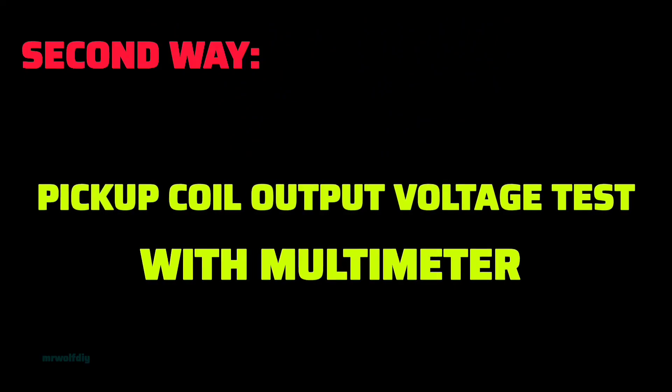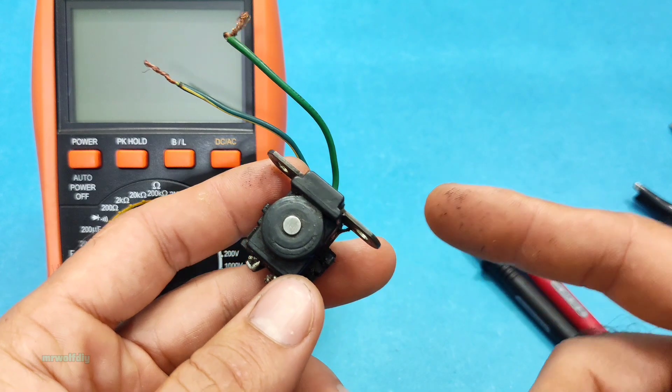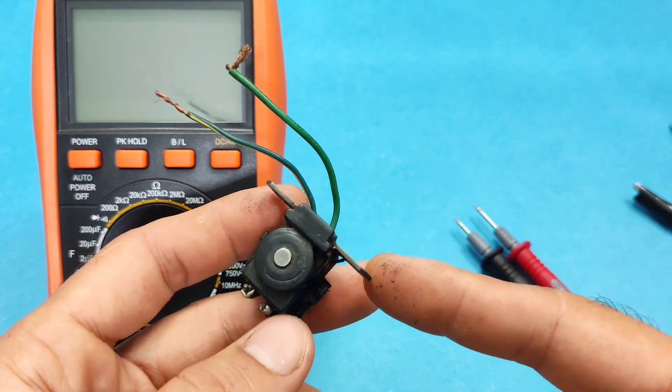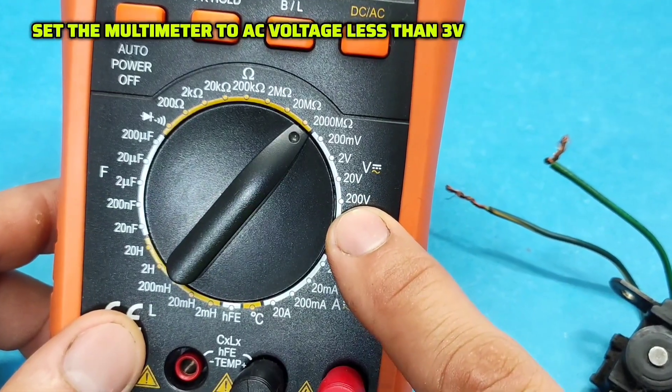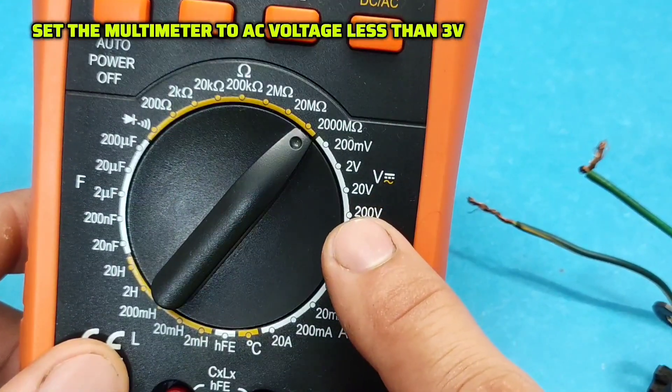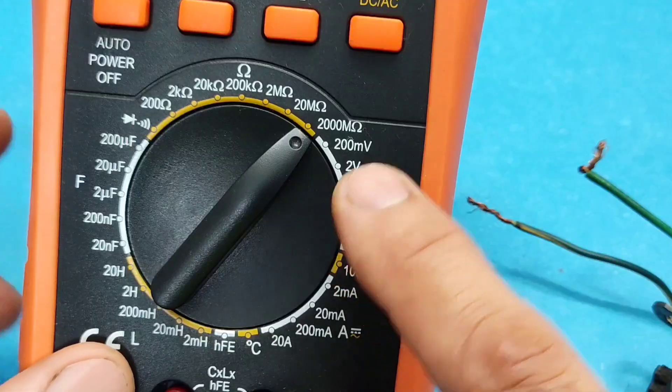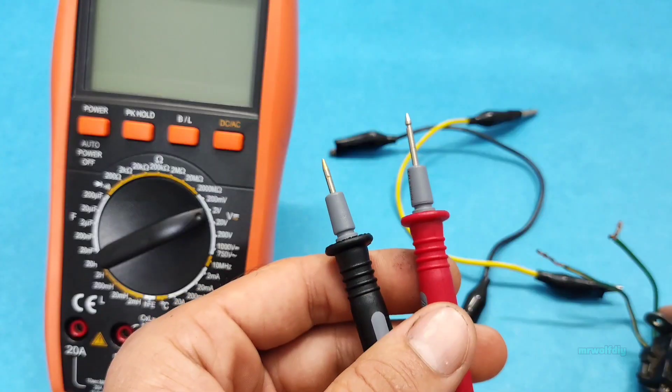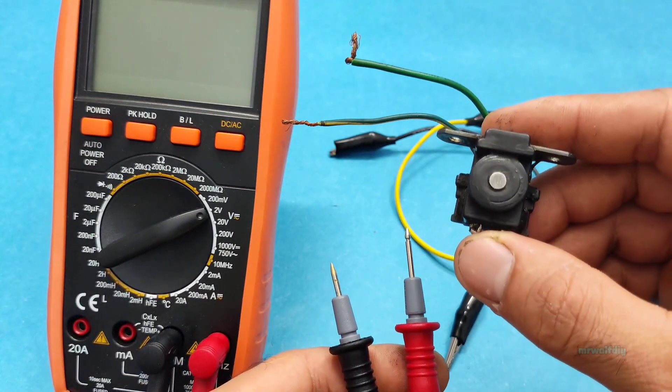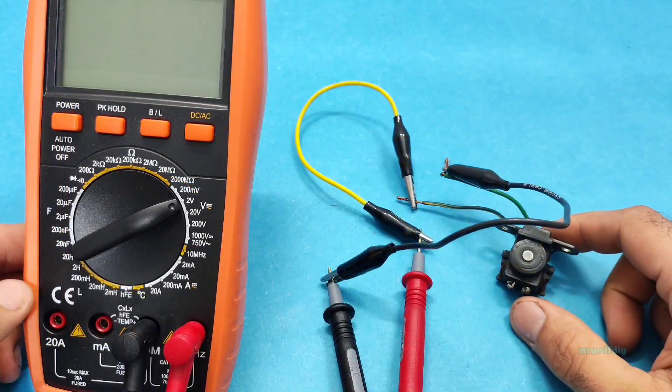Second way, voltage test. The next method is a voltage test of pickup with a multimeter. Set your multimeter to AC voltage in less than 3 volt range. And connect the probes to the pickup coil wires. That's it.